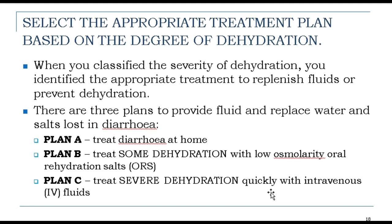Select the appropriate treatment plan based on the degree of dehydration. There are three plans: Plan A is treatment of diarrhea at home; Plan B is treatment of some dehydration with oral rehydration salts (ORS); Plan C is treatment of severe dehydration quickly with intravenous (IV) fluids.